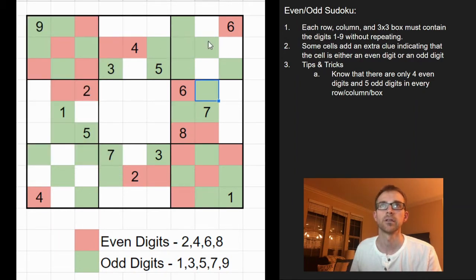Alright. And then if we look at the column just to the right of it, the 8th column, same thing can be said. There's 2 even digits. So we need 2 more. And luckily there's 2 empty cells, which we can color in as red.